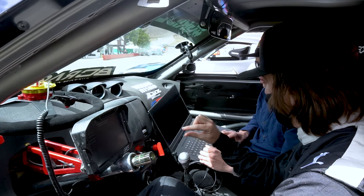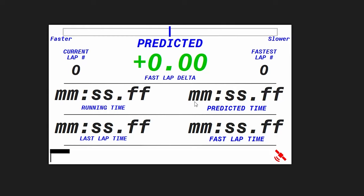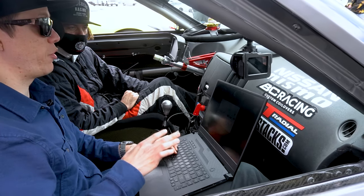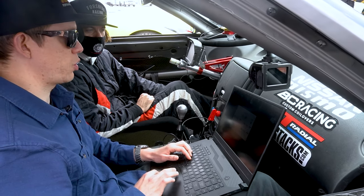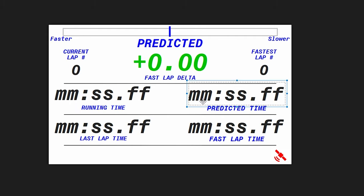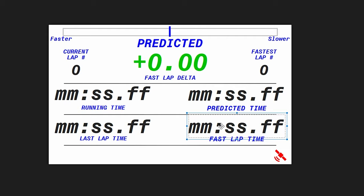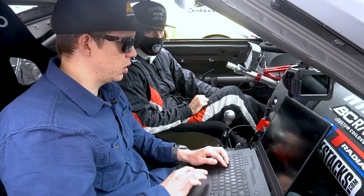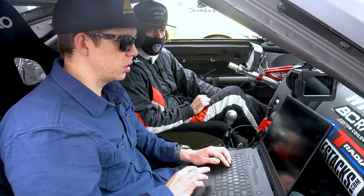I like it and I like the predictive being up at the top, front and center. Here are the different elements on this screen: your current lap, your predicted fastest lap time, your fastest lap, your current run time, your predicted time, last lap and your fastest lap. So you could compare your last to your fastest to your predicted lap time. That's awesome, I really like that screen.